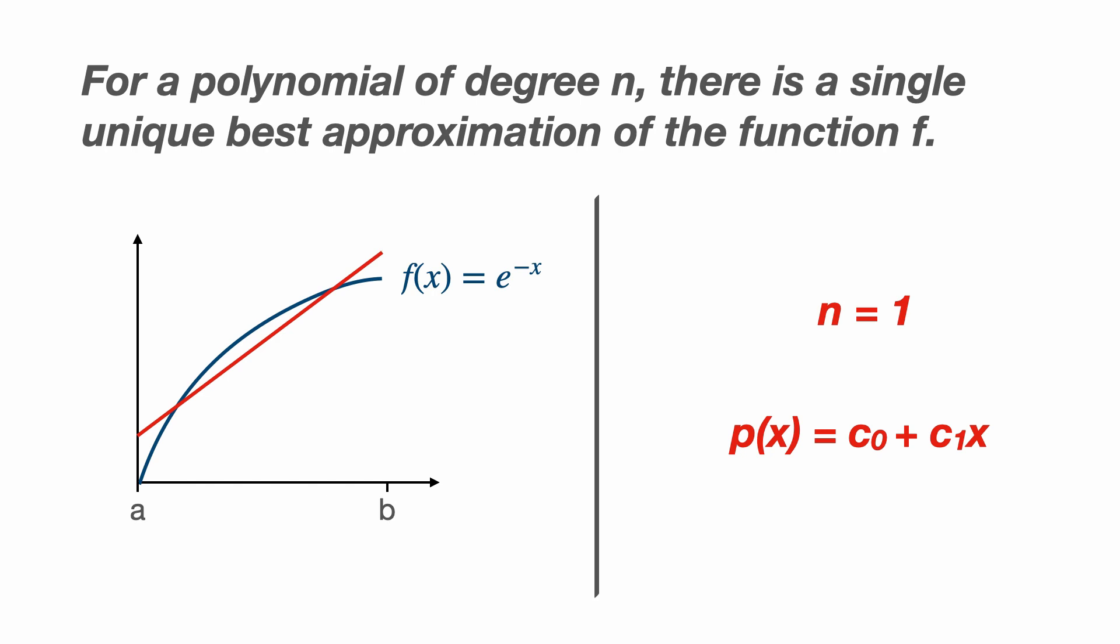Increasing n will increase the complexity of the polynomial and give us a better approximation, but for any particular degree of polynomial there will still be a set of parameters C0 to Cn which give the unique best approximation to F.